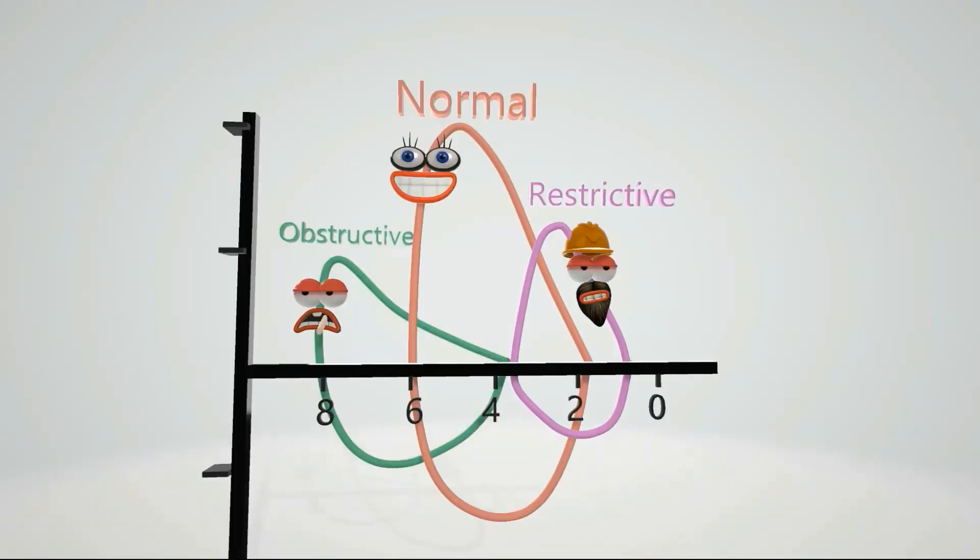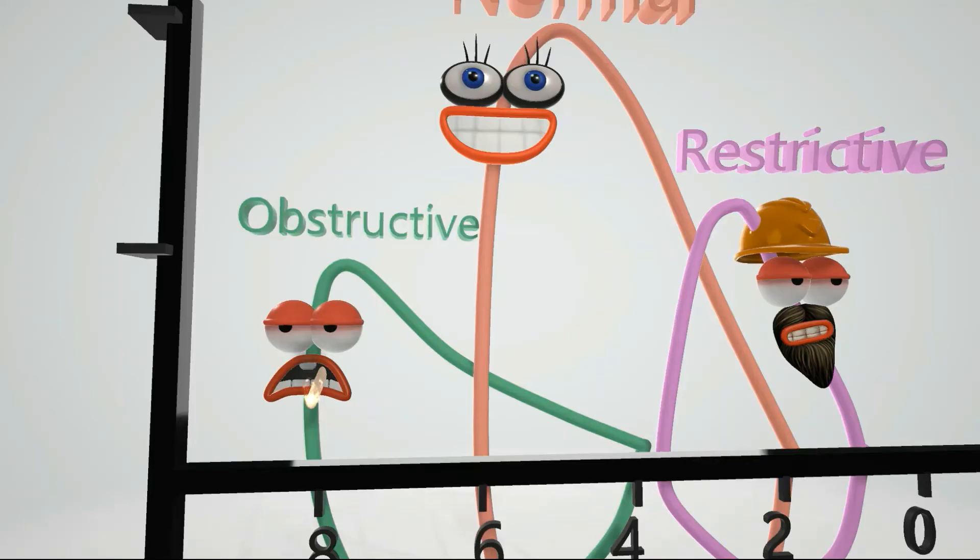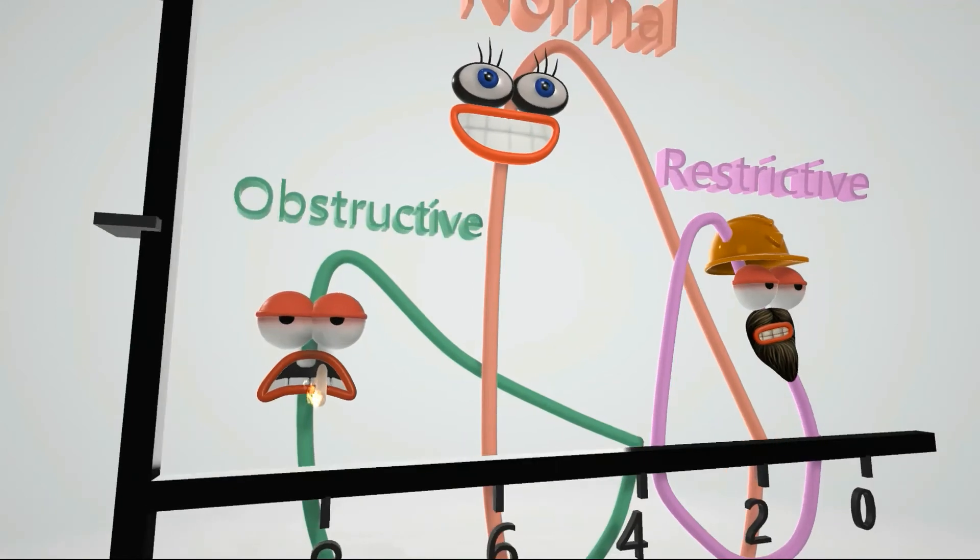This guy is going to represent obstructive lung disease. Obstructive lung disease includes things like emphysema and chronic bronchitis, often associated with smoking. Thus we have this guy who's smoking.